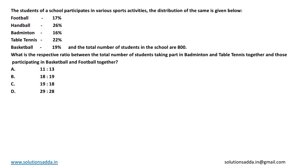Hence the question follows: What is the respective ratio between the total number of students taking part in badminton and table tennis together to those participating in basketball and football together? So we need to find out the ratio between number of students in badminton plus table tennis divided by basketball plus football.